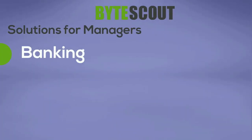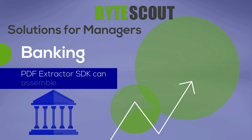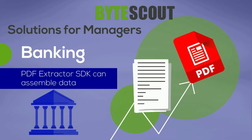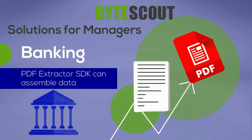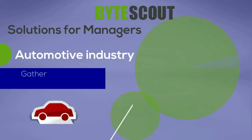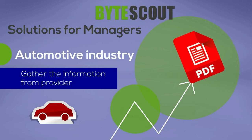In the banking industry, collect data from archives, search for particular text, and convert third-party reports into accessible ones. In the automotive industry, gather information from supplier archives and order forms.